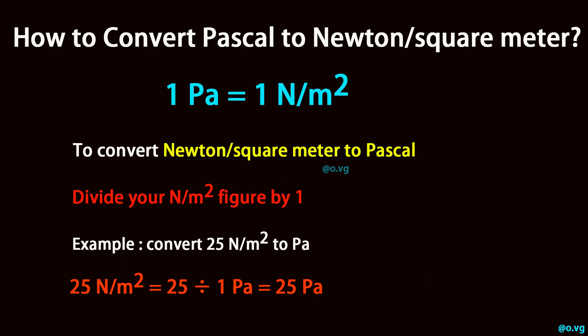To convert Newton per square meter to Pascal, divide your Newton per square meter figure by 1. For example, convert 25 Newton per square meter to Pascal: 25 Newton per square meter equals 25 divided by 1 Pascal, which equals 25 Pascal.